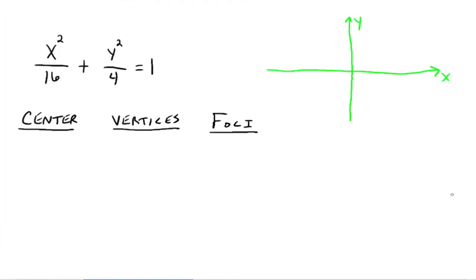This is part two on the study of the ellipse. So x squared over 16 plus y squared over 4 is equal to 1. First thing we want to note is what's the center. The center would be the origin, 0, 0.